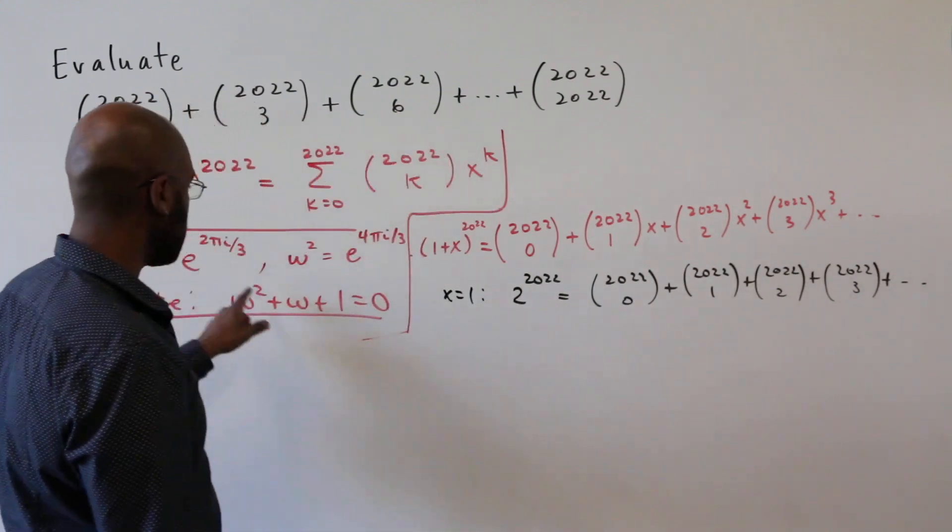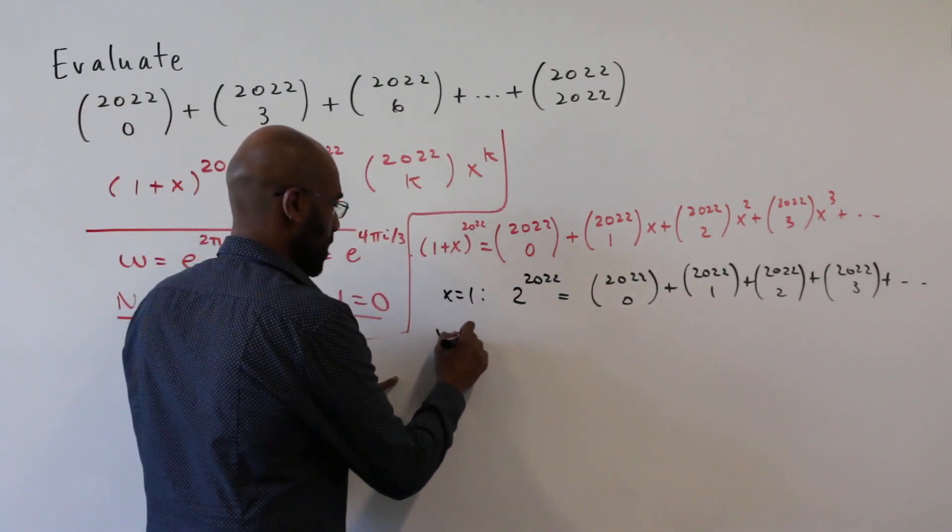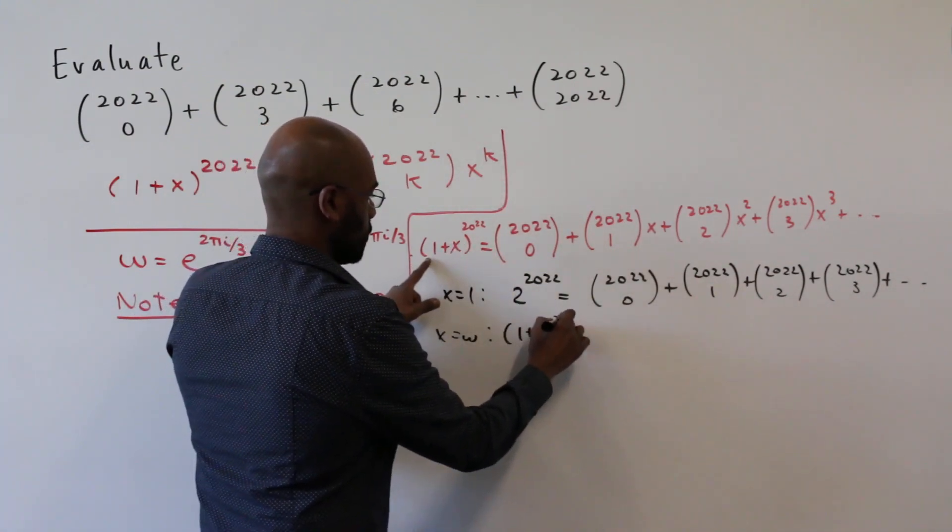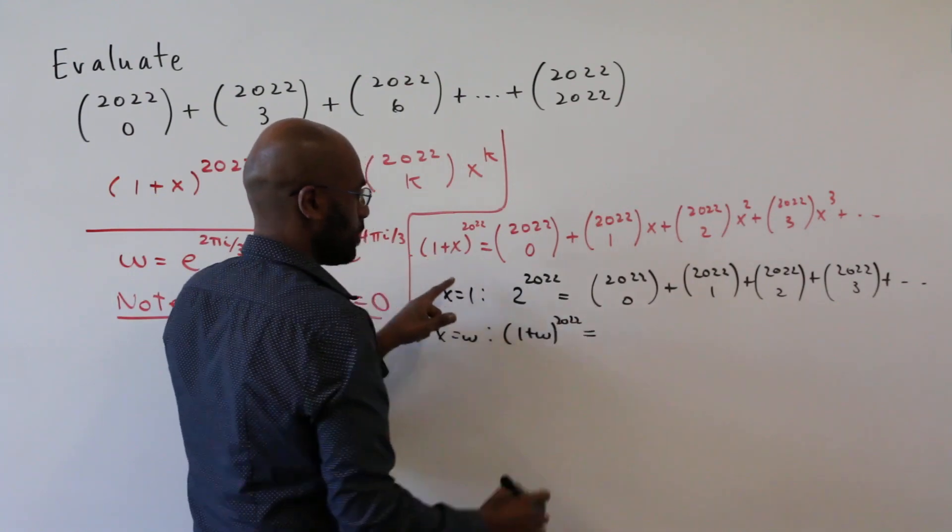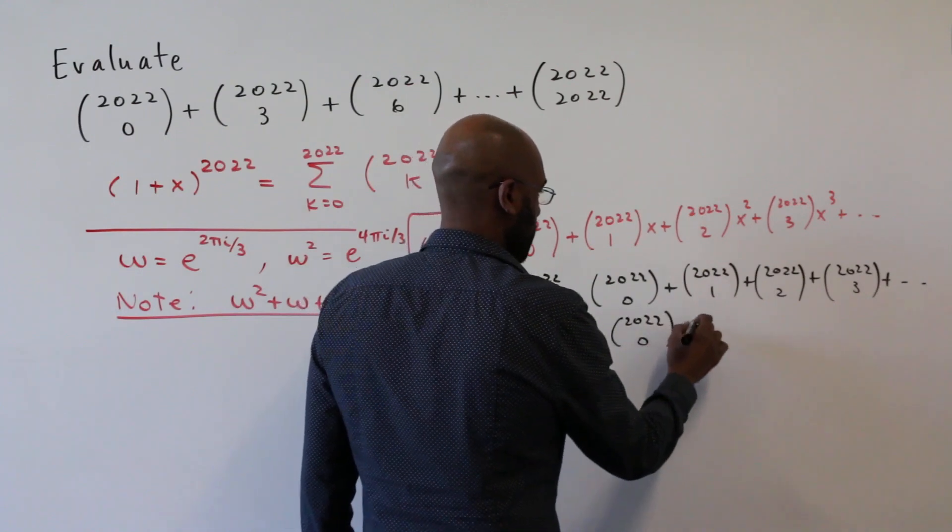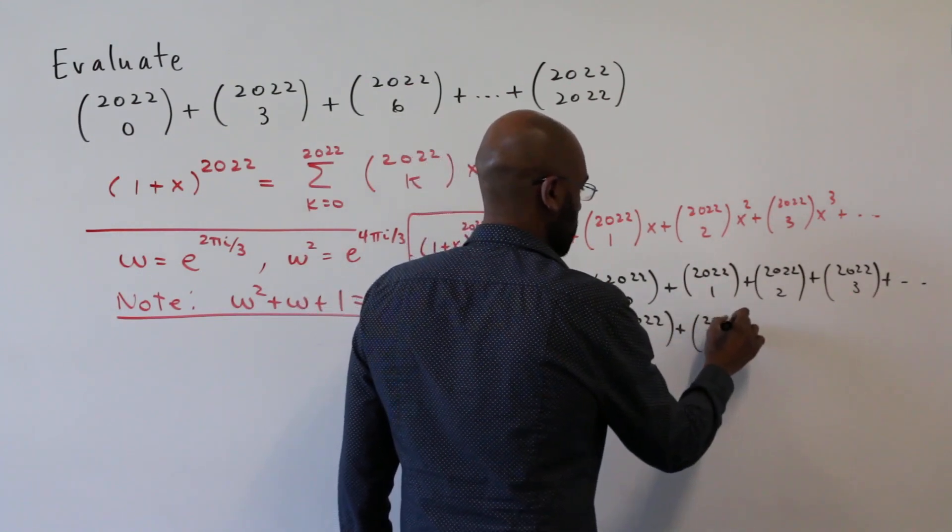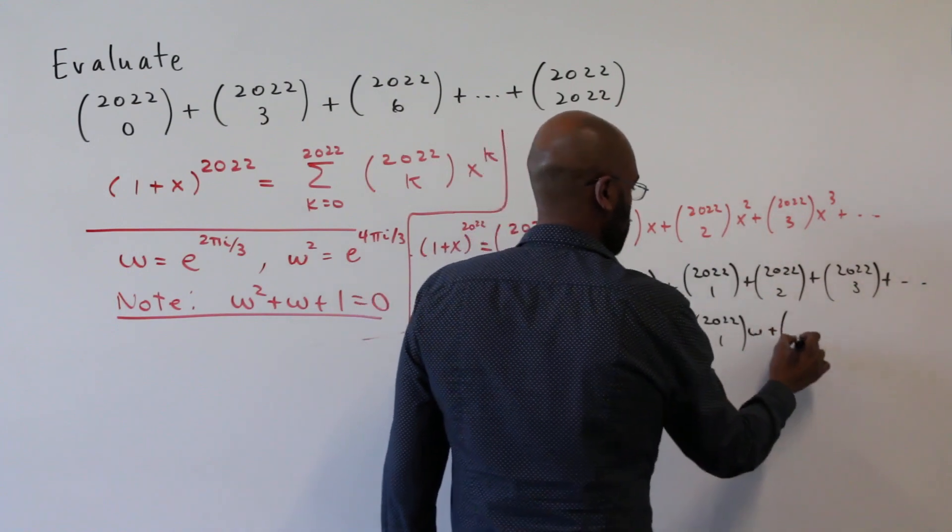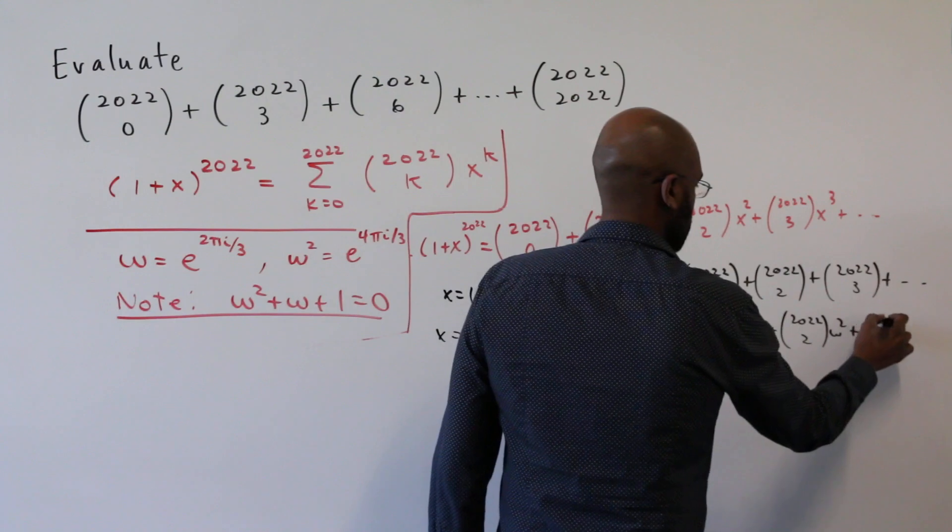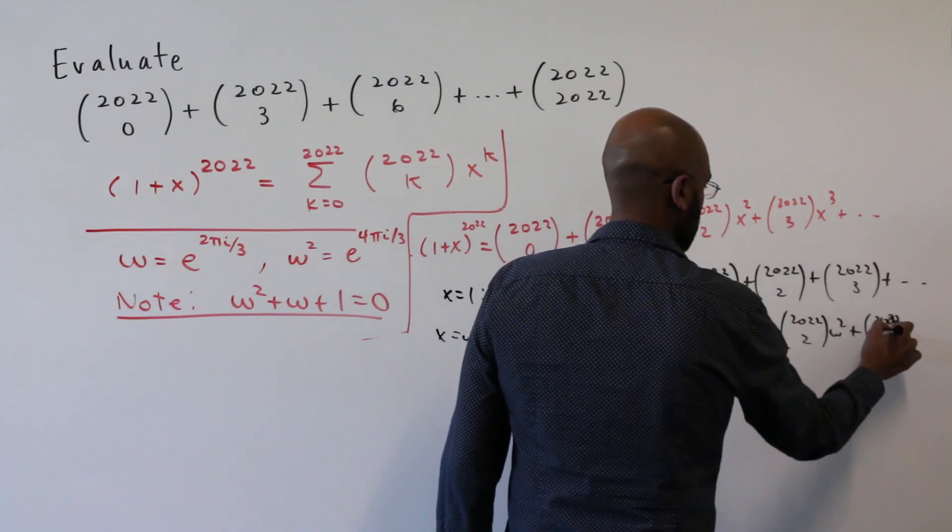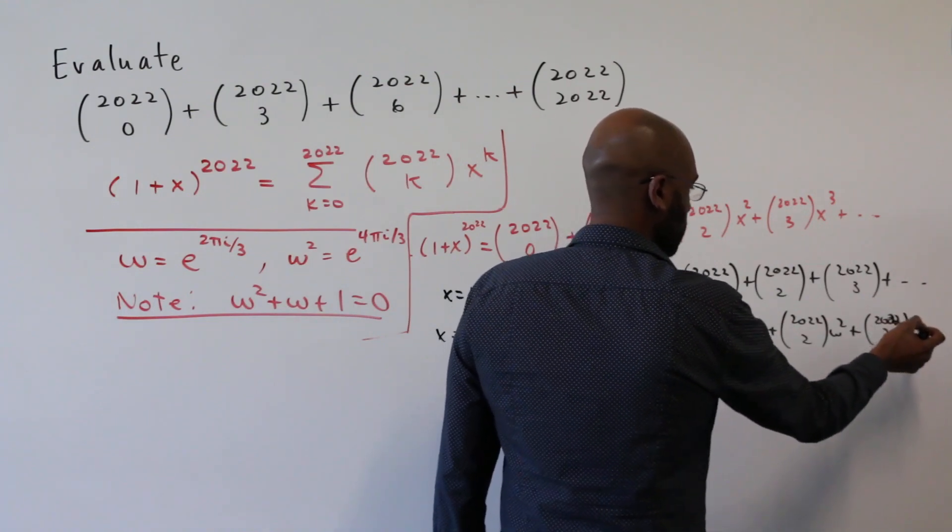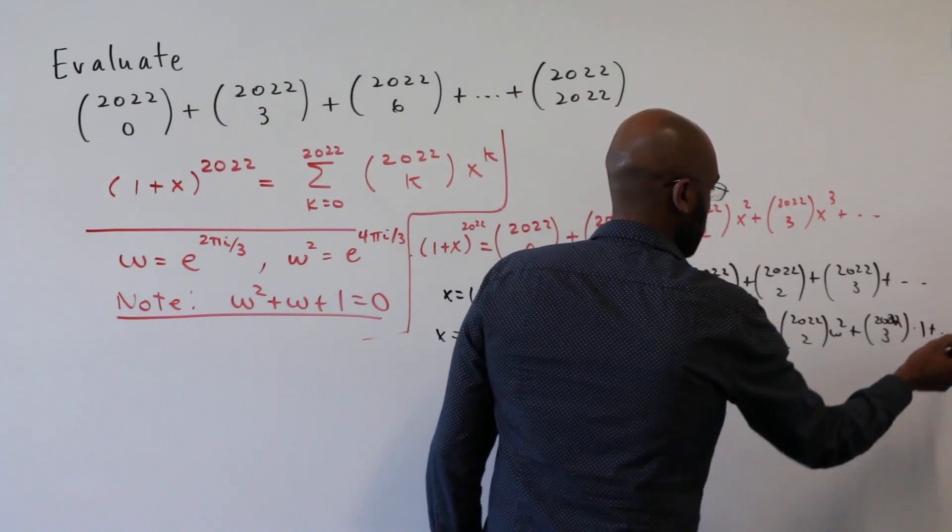Now let's plug in some of these roots of unity. Let's plug in x equals omega. Here we'll get one plus omega to the 2022. And it'll equal 2022 choose zero plus 2022 choose one omega plus 2022 choose two omega squared plus 2022 choose three omega cubed. And omega cubed is one. So this will repeat.